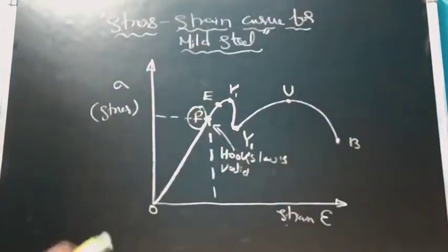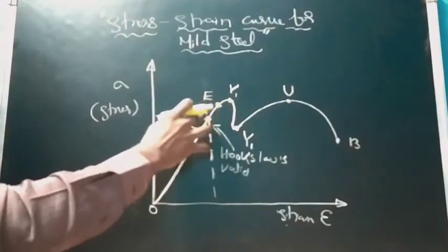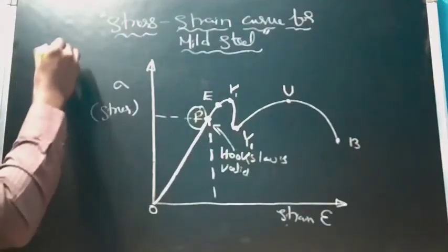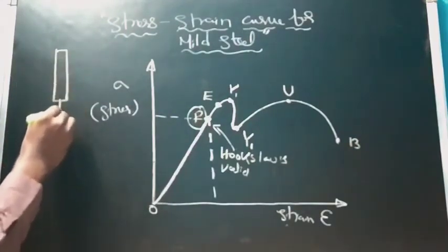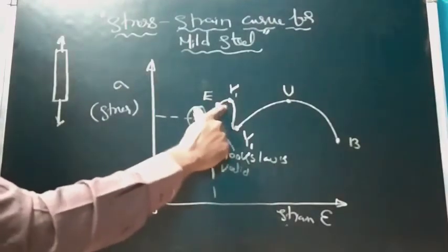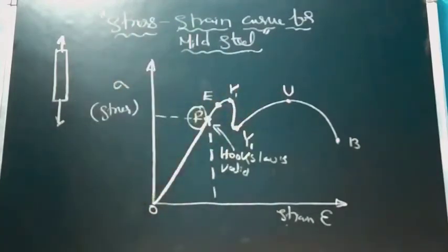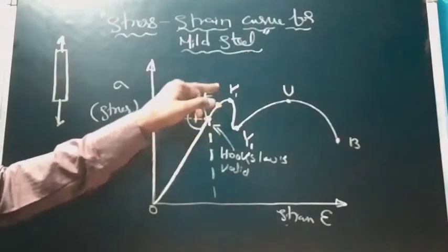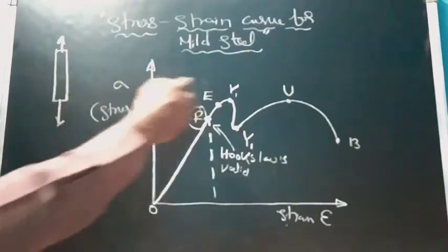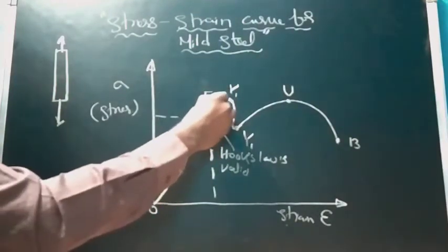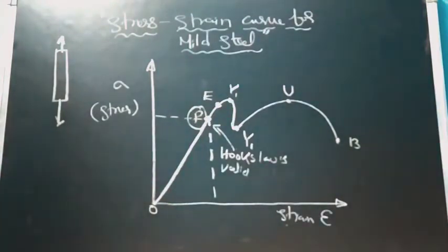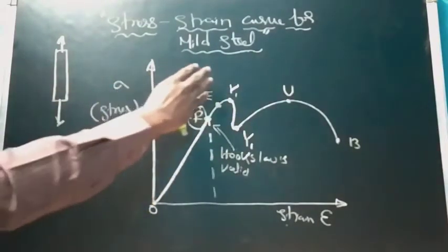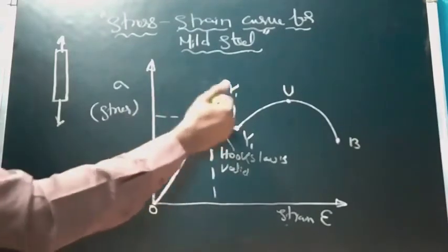Next we have the elastic limit E. This is the maximum stress that may develop in simple tension. As we discussed in earlier videos, the elastic limit is the point up to which, if you release the load, the material will regain its original position — it will come back completely to its original shape.